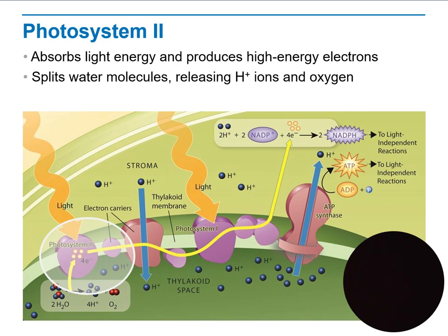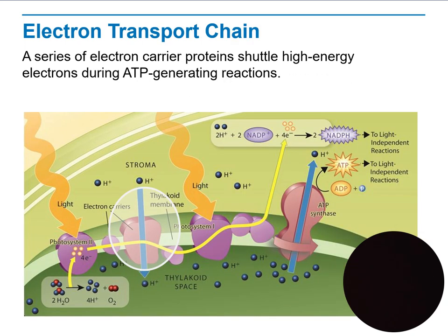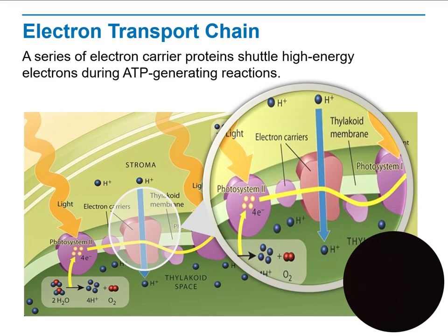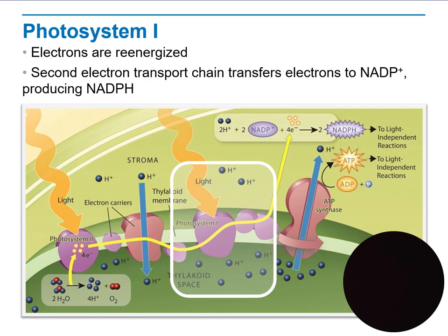In photosystem II, light energy is absorbed by electrons in the pigments, increasing the electrons' energy level. These high-energy electrons absorb light energy, split water molecules, and release hydrogen ions used to produce NADPH, as well as oxygen. The electron transport chain — a series of electron-carrier proteins — shuttles high-energy electrons during ATP generation. In photosystem I, electrons are re-energized, and the second electron transport chain transfers electrons from NADP+ to produce NADPH.